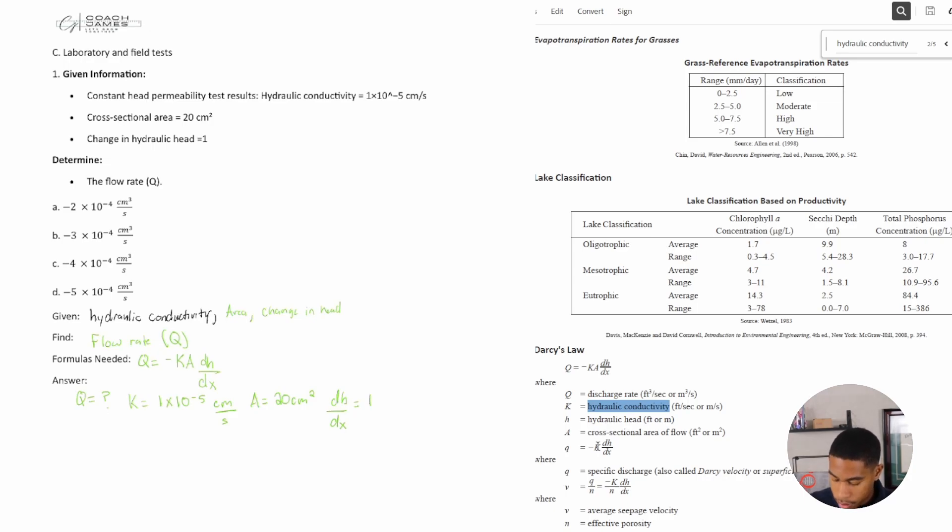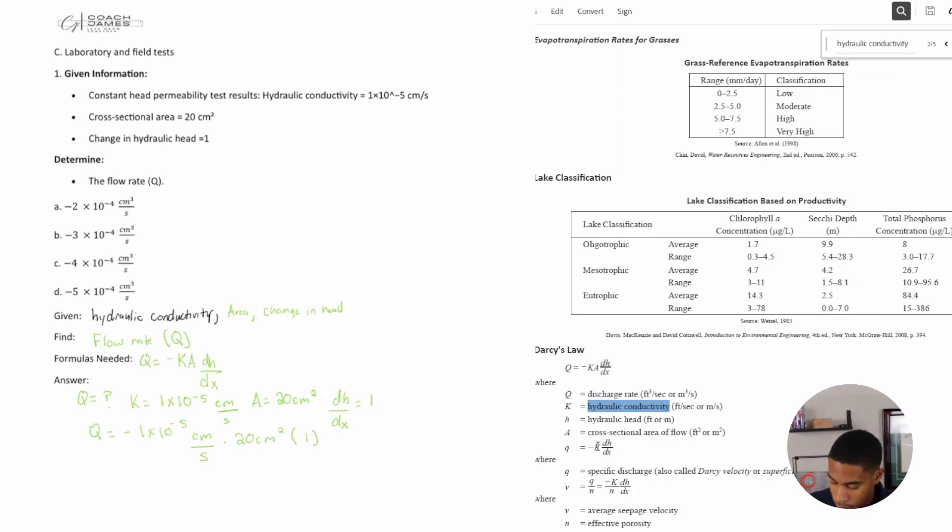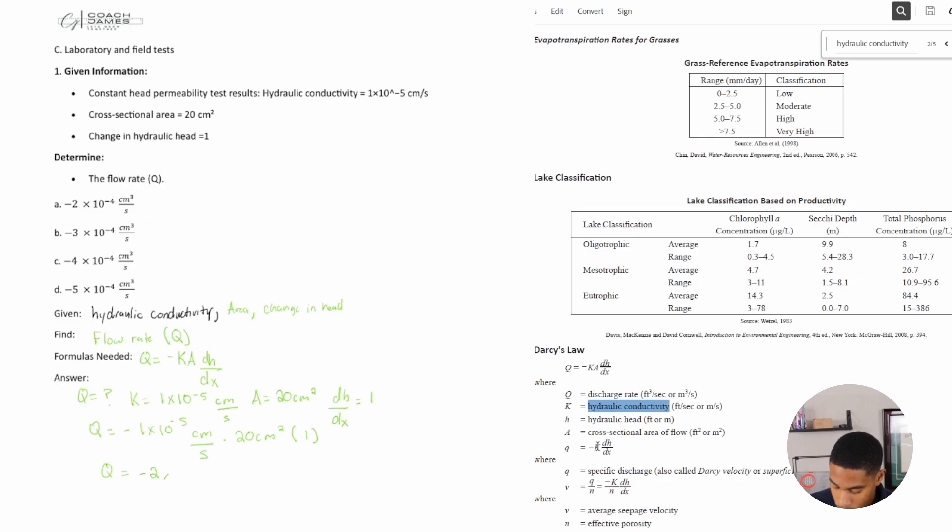All right, so plug and chug. Q equals negative 1 times 10 to the negative 5 centimeters per second times my area, 20 centimeters squared, times my change in hydraulic head, which equals 1. When I multiply all this out, I get negative 2 times 10 to the negative 4 centimeters cubed divided by seconds.